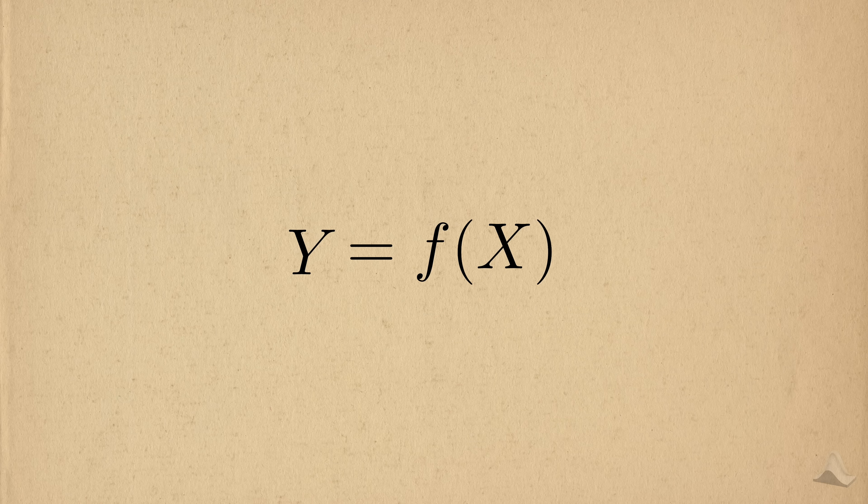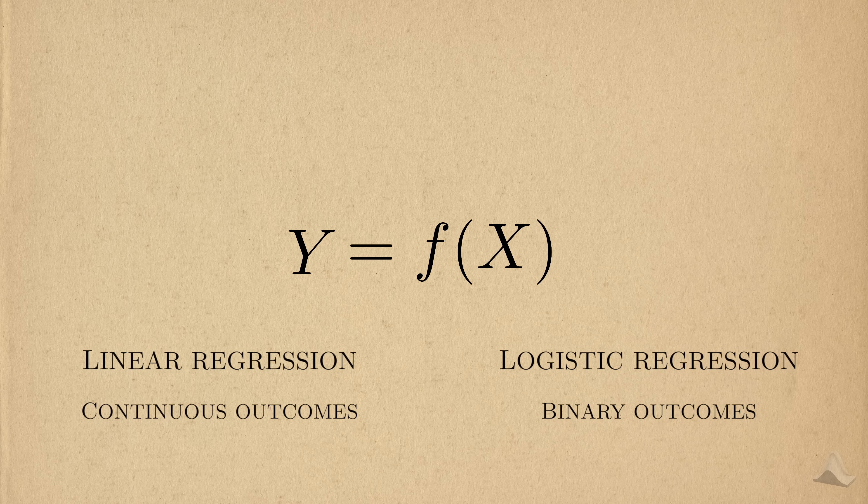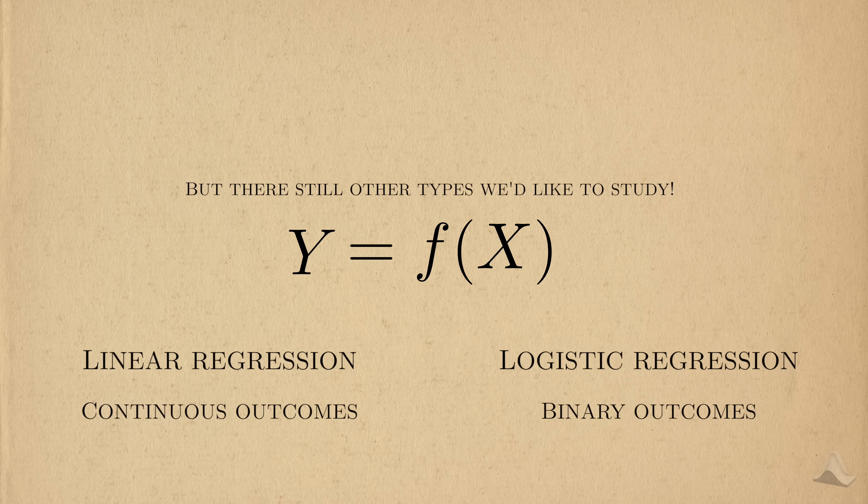From past videos, we saw that linear regression allowed us to work with continuous outcomes, while logistic regression allowed us to work with binary outcomes. Continuous and binary outcomes are probably the most commonly studied types of outcomes. But there are still others that would be useful for us to study.